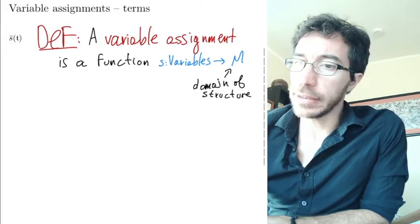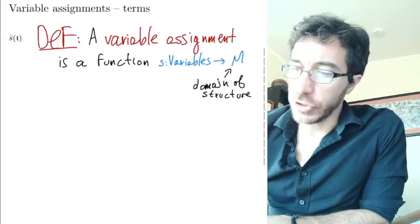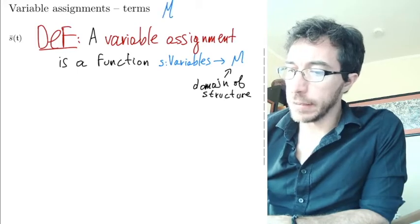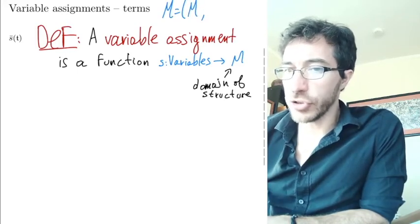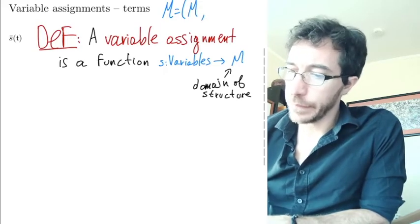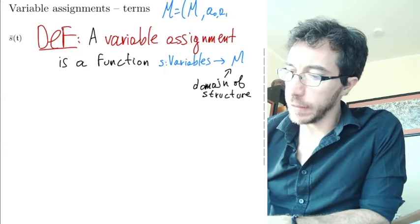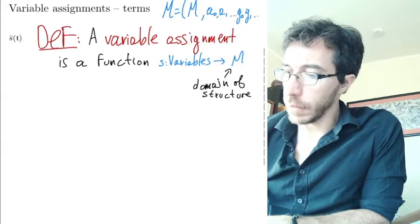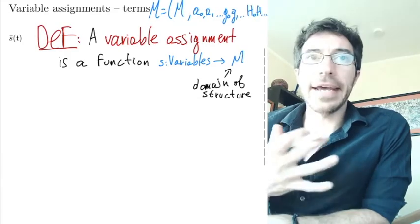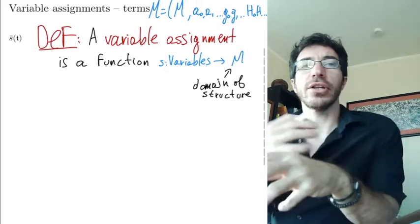Okay, so we have this structure underneath. So let's maybe write that in a size. So we have some structure here, M, that we're considering that has some interpretation: a0, a1, f0, g0, g1, h0. And now we want to extend, the same as we did in sentential logic, this variable assignment to an assignment to all terms.